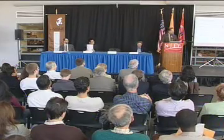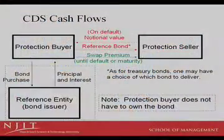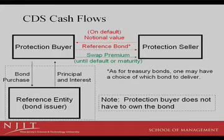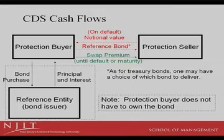Here's how it works: you have a bond issued by a company, and somebody who buys the bond pays money to the company, which pays back principal and interest over a period of years. Then there's a third party — the insurance company, or protection seller. The protection buyer, who owns the bond, pays premiums, and if there's a default, money comes back the other way.